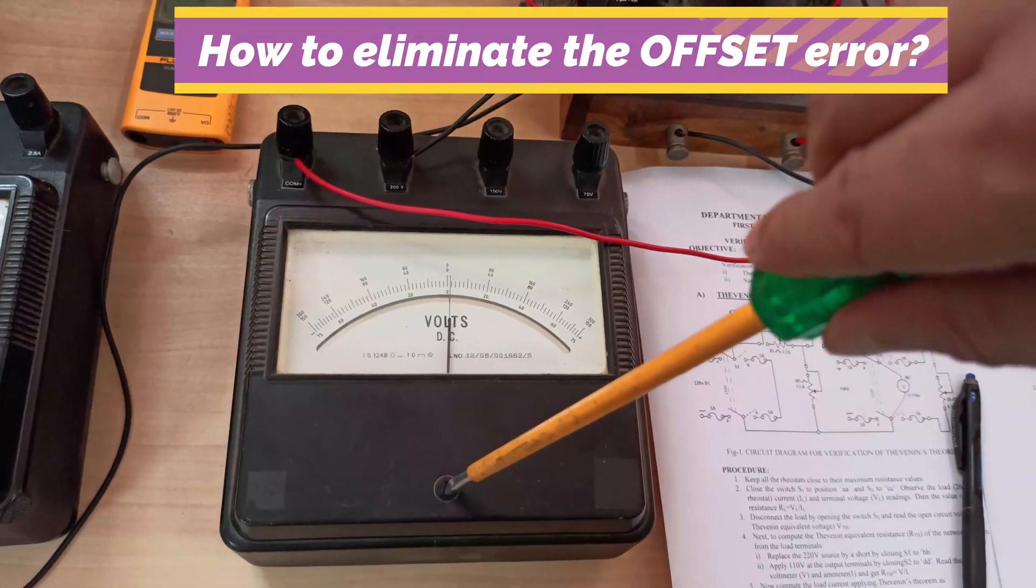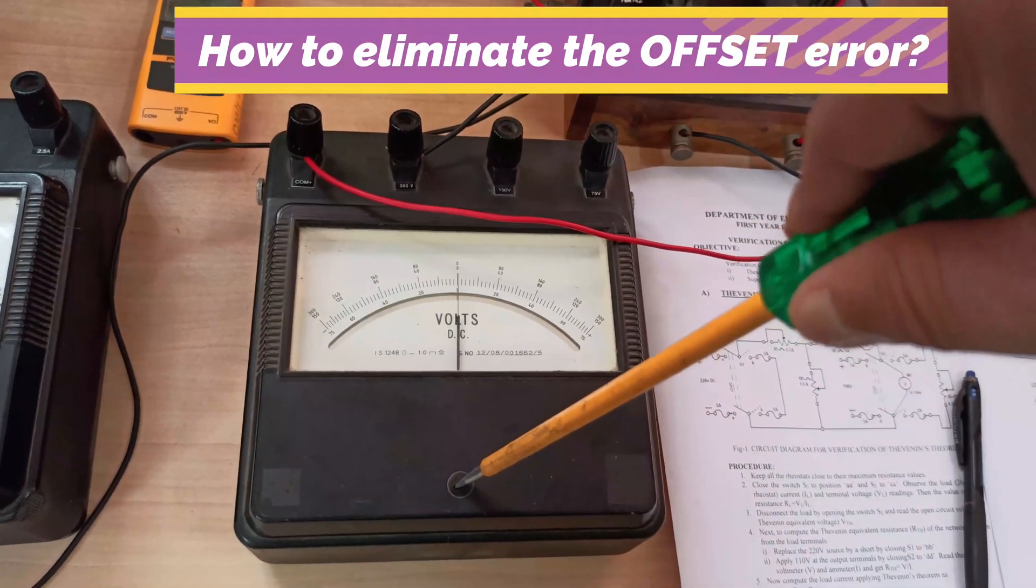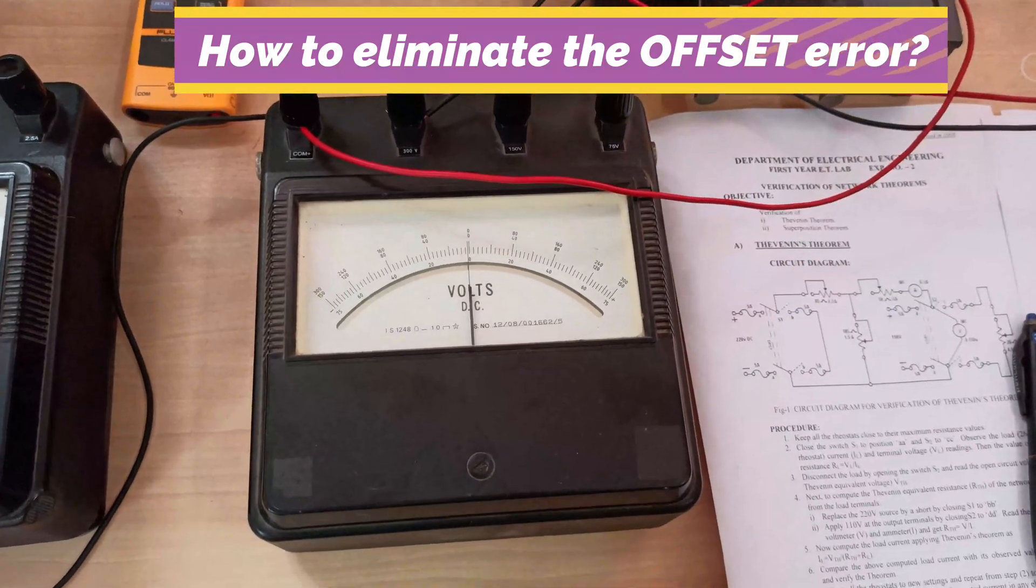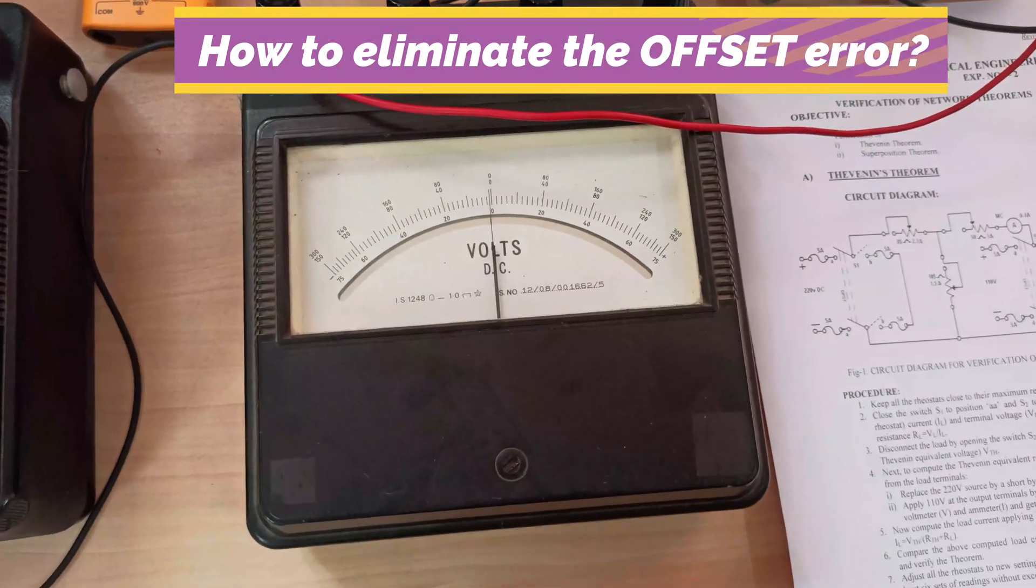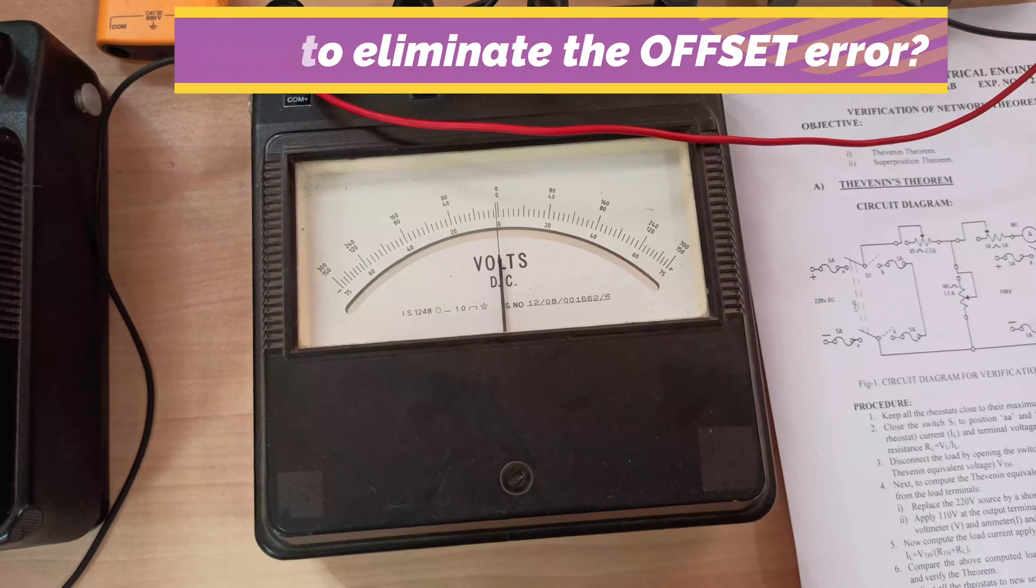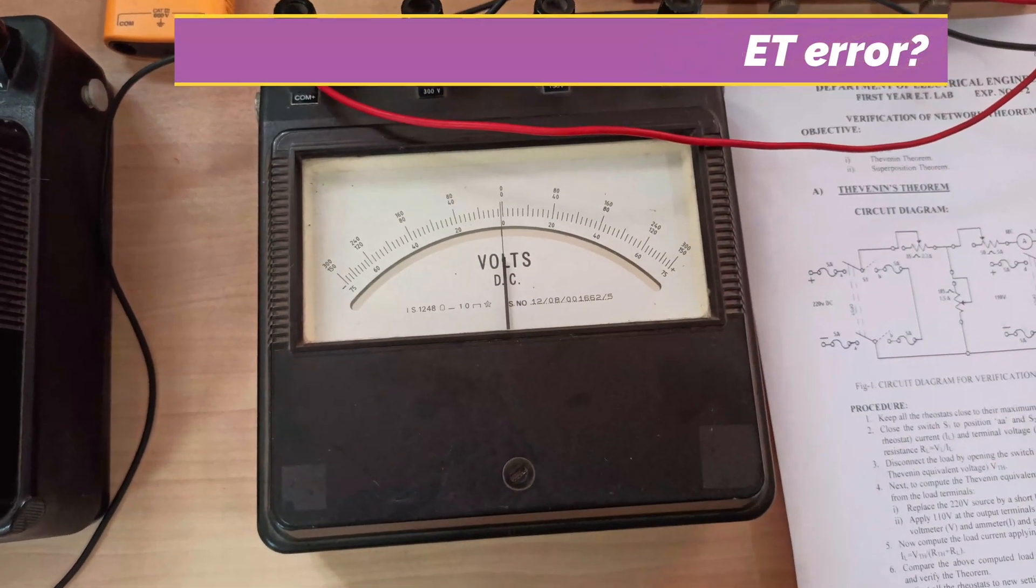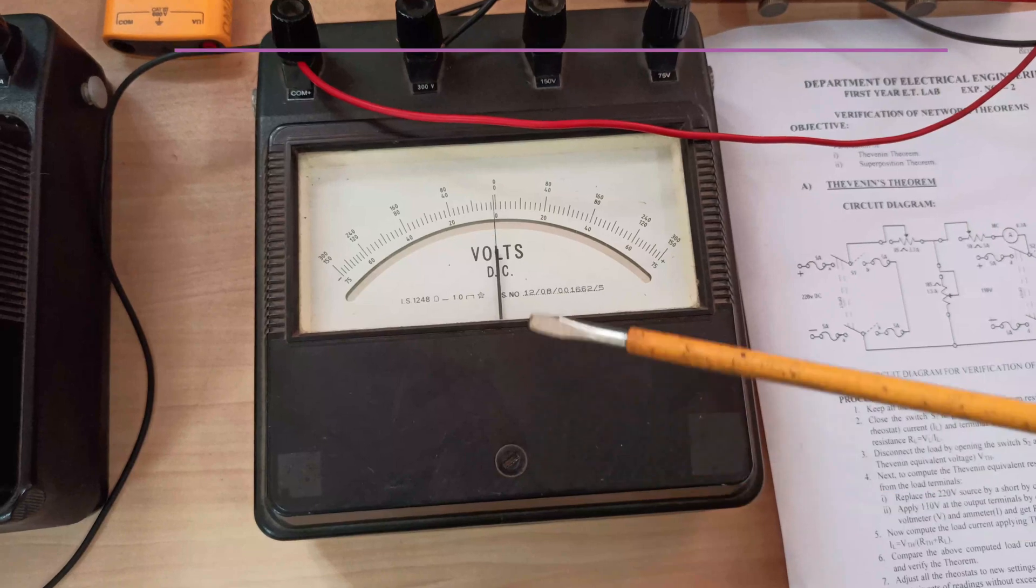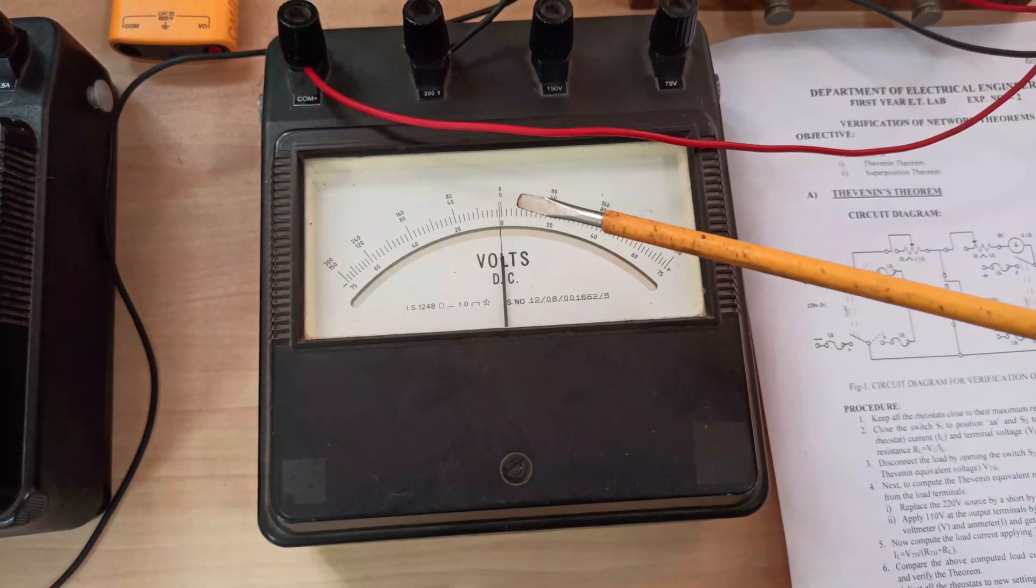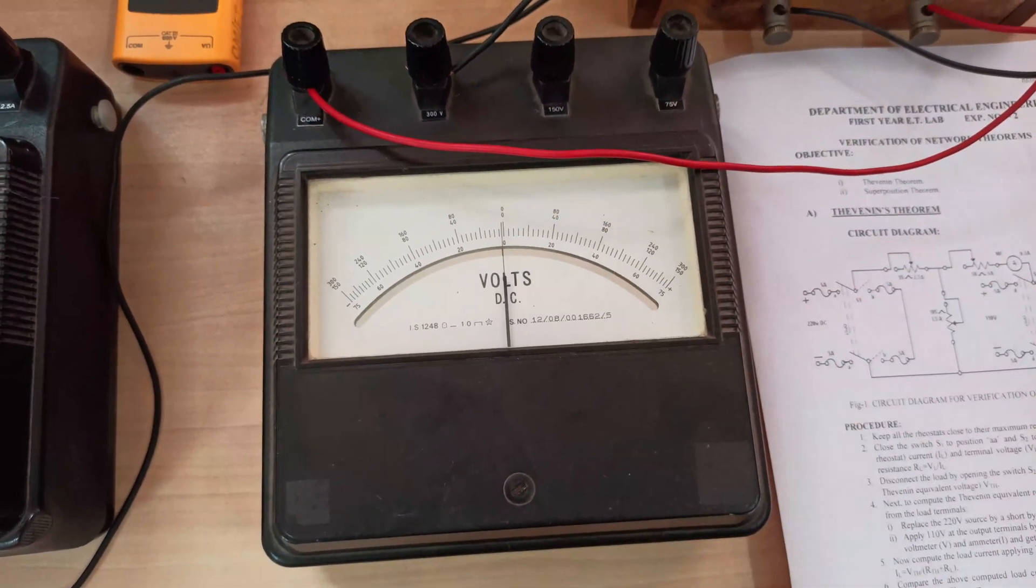Again you align yourself, make position such that those two lines are aligned together. But still here you can see there is a very small error. So again you adjust the screw so that these two lines are perfectly coinciding with the zero line to eliminate any error.